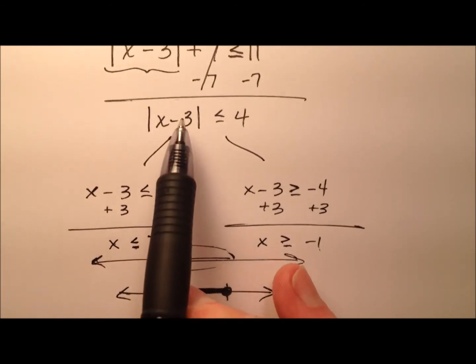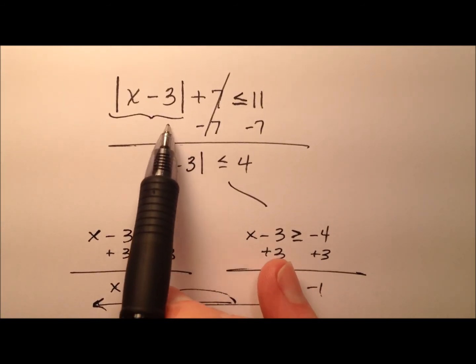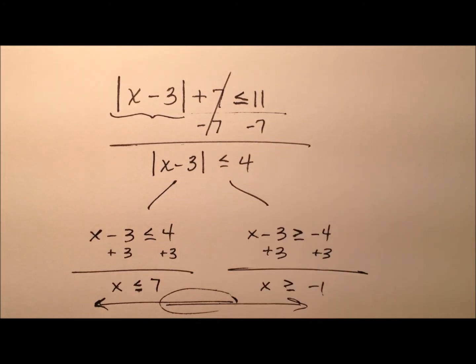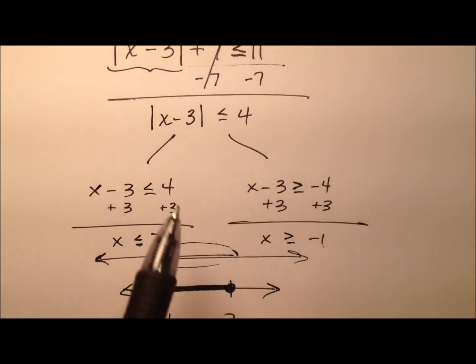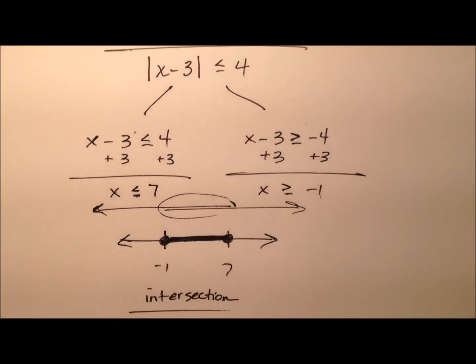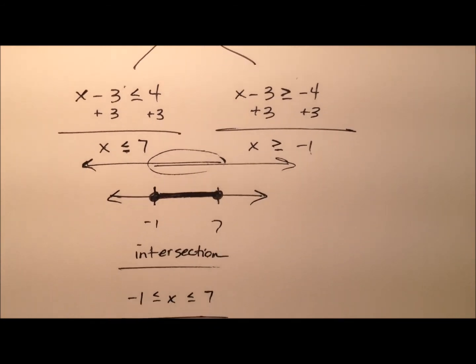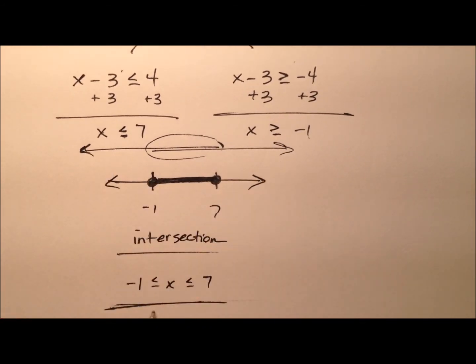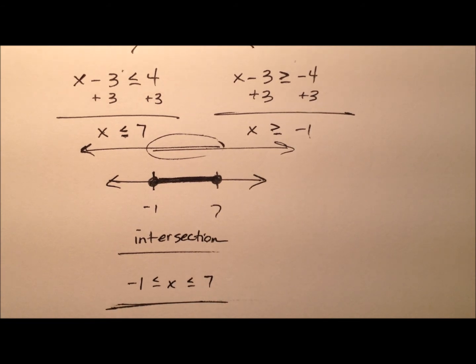In general, we started with our absolute value inequality, solved it by splitting it into two simple inequalities, and were able to graph it and write our solution as a compound inequality.